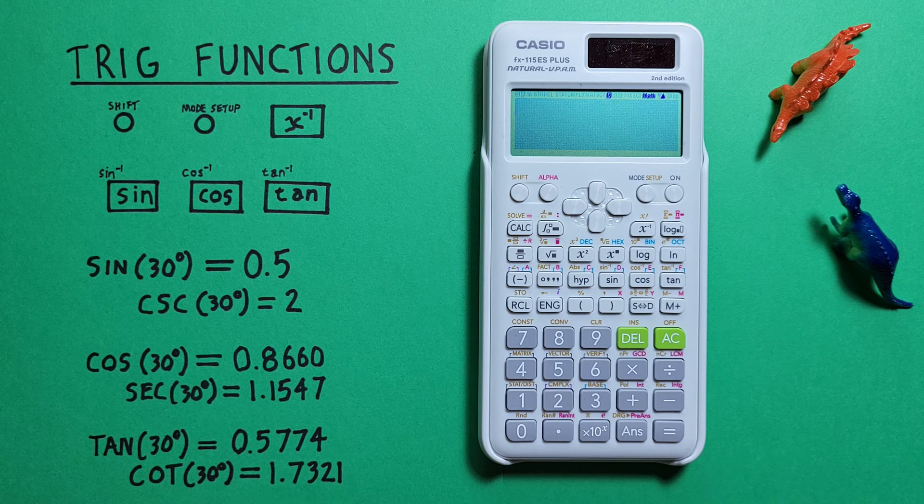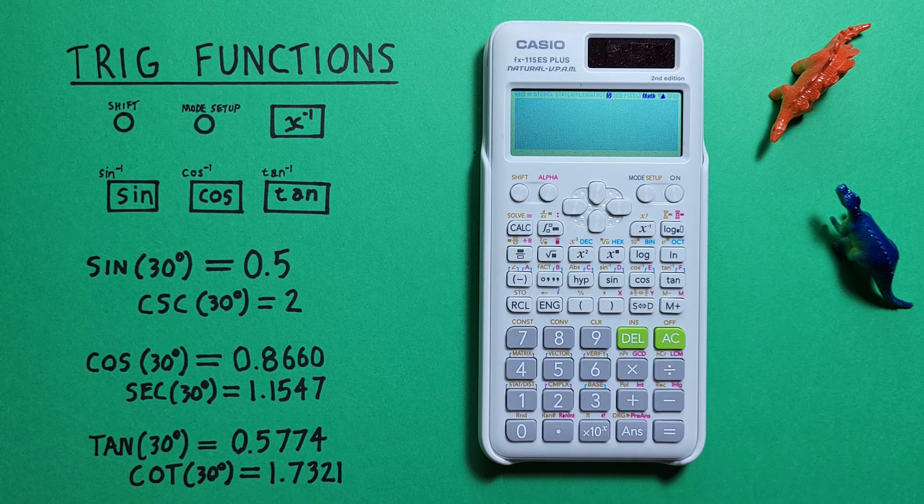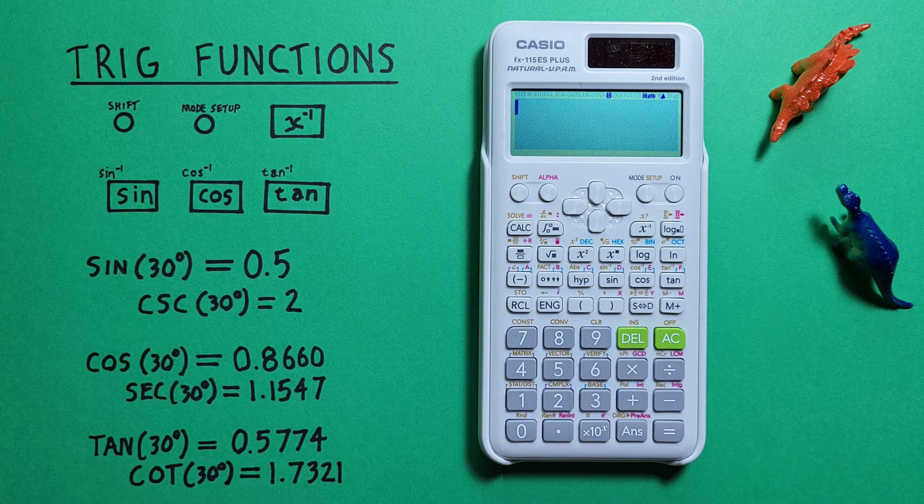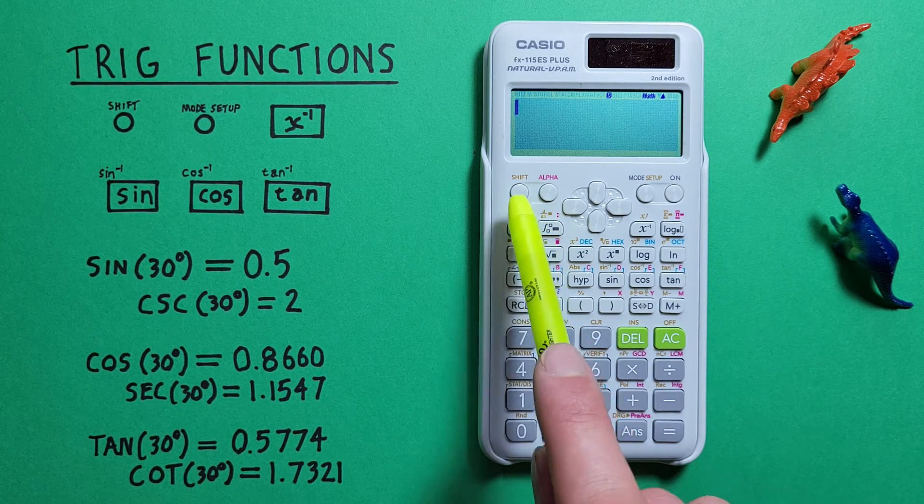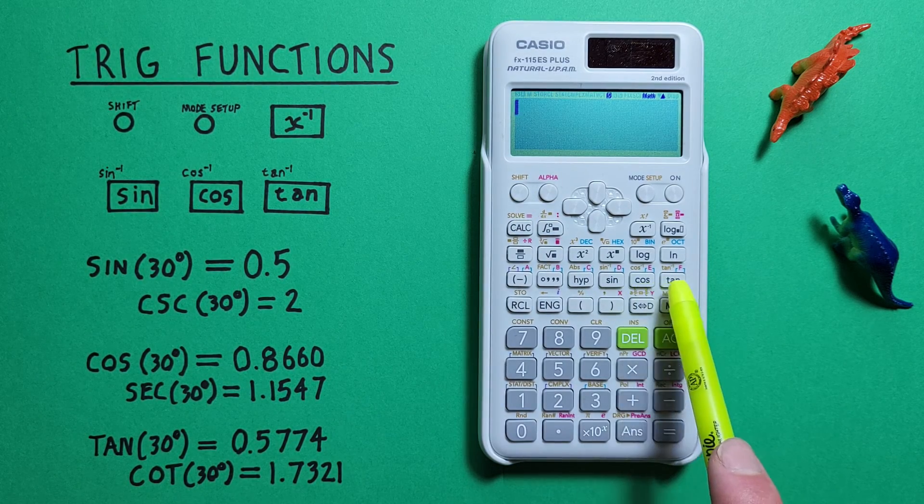We can also find arc sine, arc cos, and arc tan with this calculator. To do that we use the shift function of the sine, cosine, and tangent key, which has the negative 1 above the sine, cosine, and tan symbol.